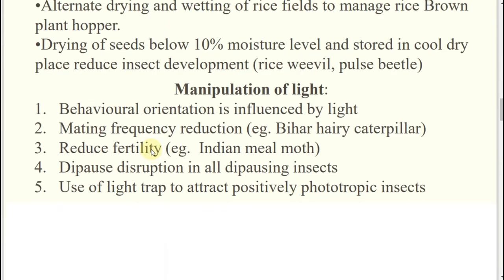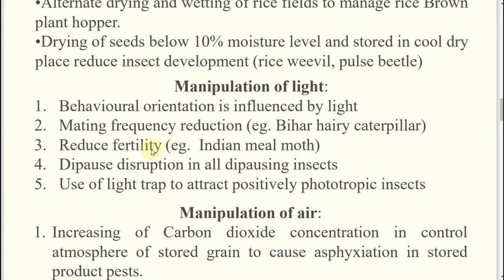Manipulation of light for pest management: what is the behavior of insects towards light? Some are positively phototrophic, some are negatively phototrophic. Those pests coming towards light — use a light trap. Those going away from the light source — switch on the light, they will go away. In case of bear hairy caterpillar, modifying light frequency will reduce their mating frequency. In case of the Indian meal moth, switching on light reduces their fertility or fecundity. Light can also be used for diapause disruption.